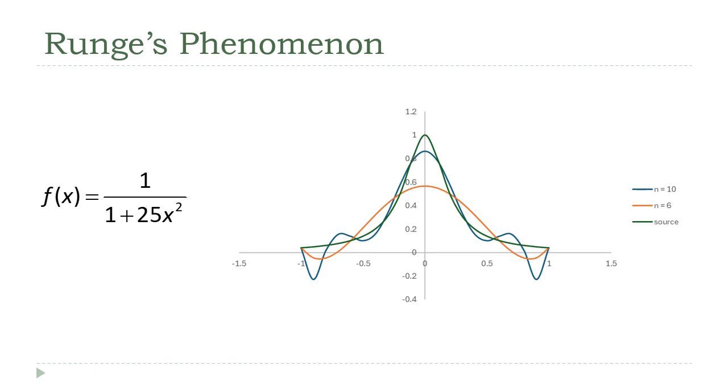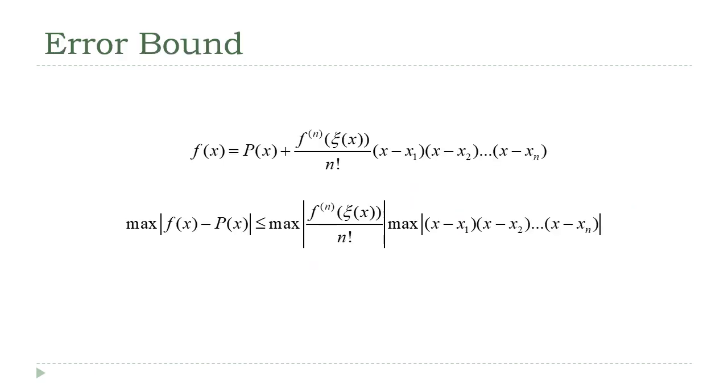So here's what's going on. What I did here is I took the p of x, I moved it over to the left-hand side. So f of x minus p of x equals that error term. And then I took the maximum of both sides, the maximum of the absolute value. Because I want to get some idea of an upper bound on this error.